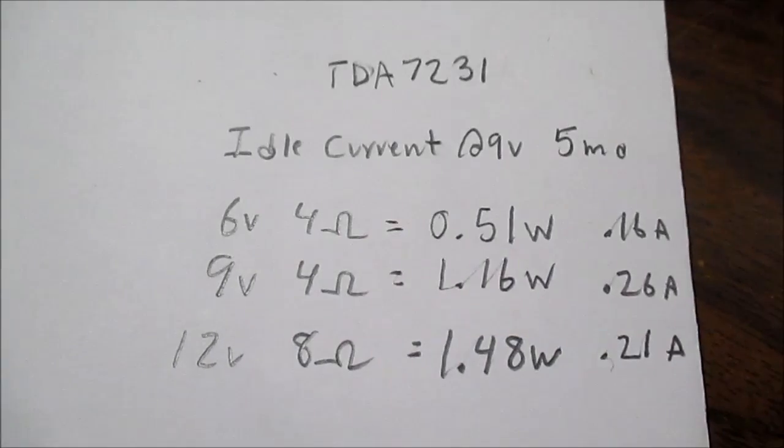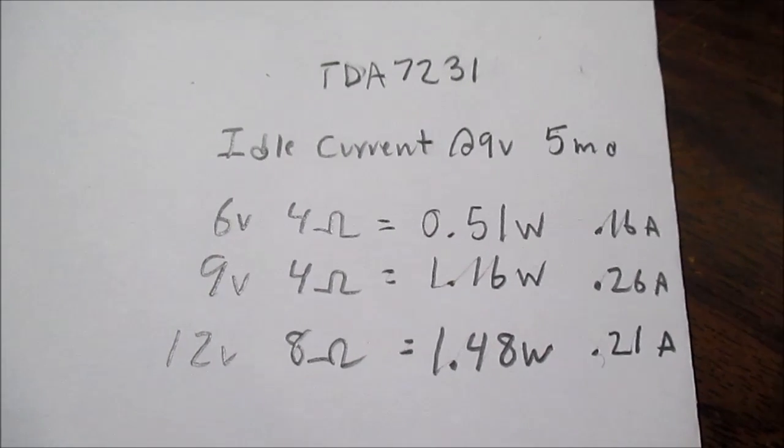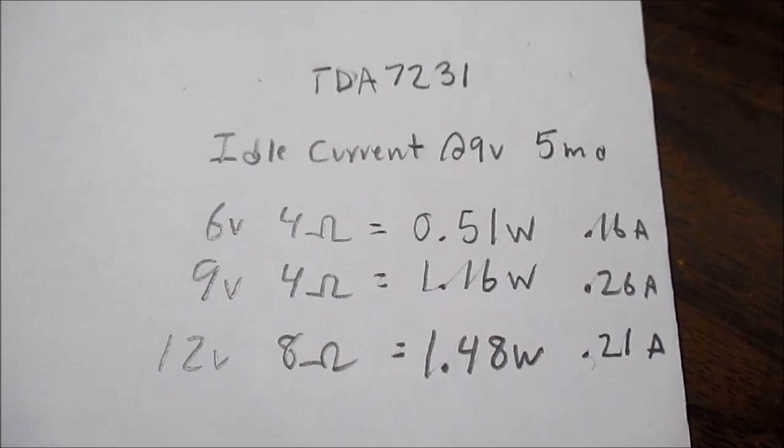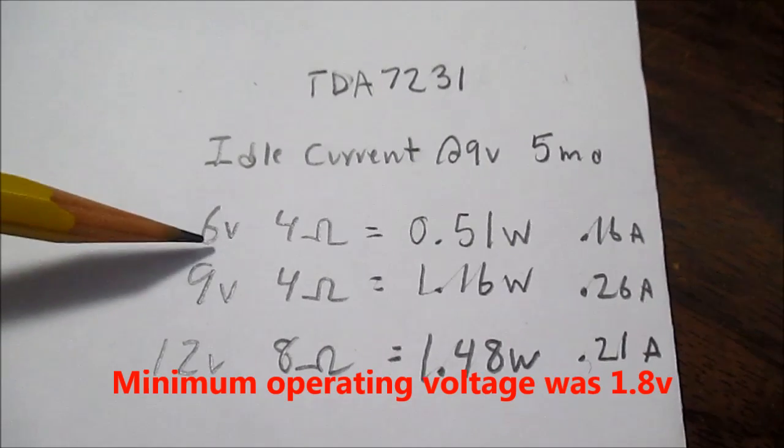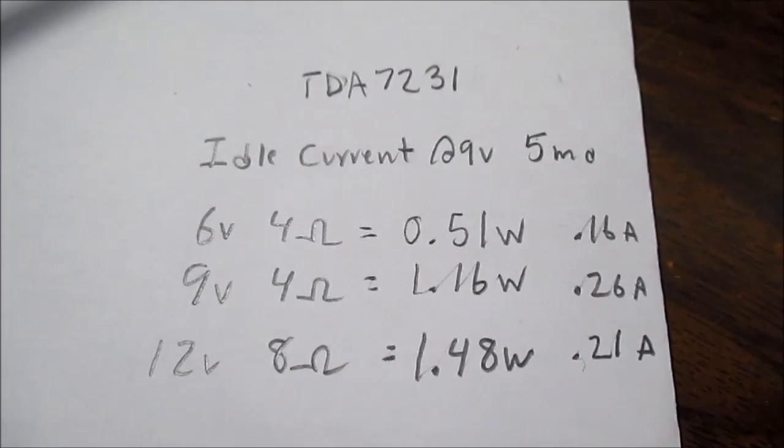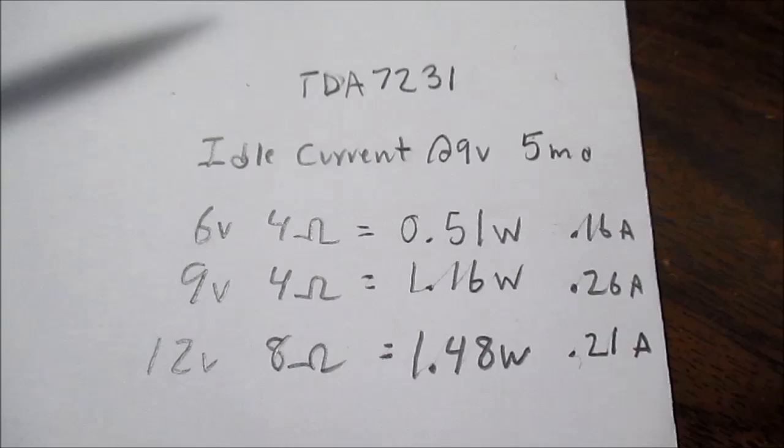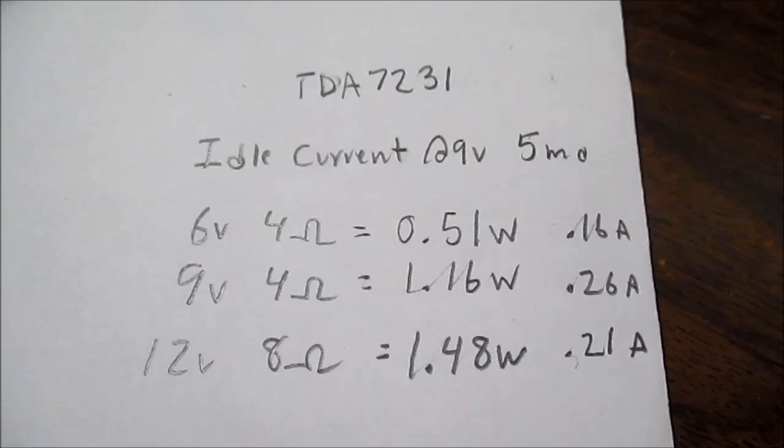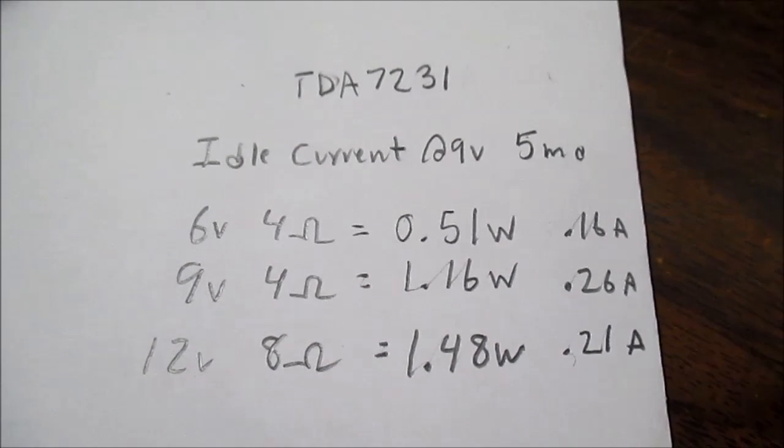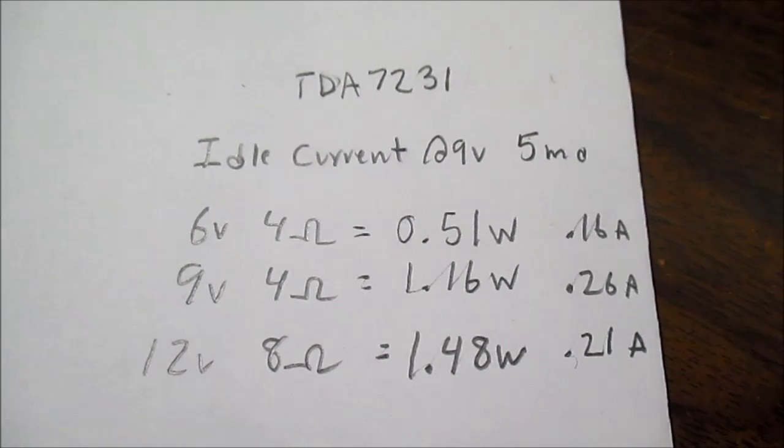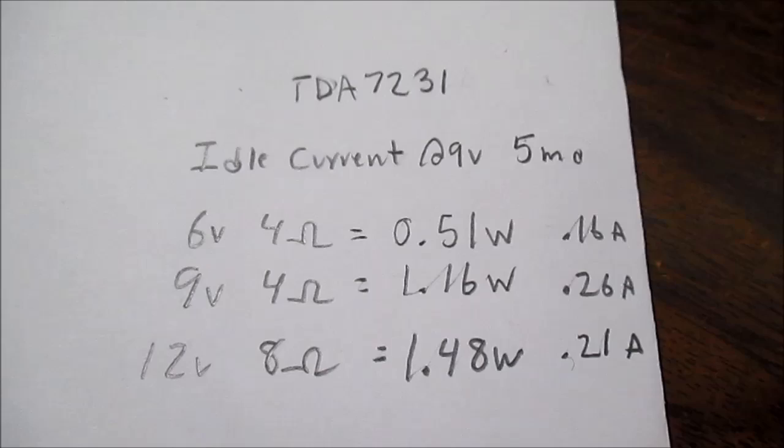So in summary, the TDA7231 chip, the idle current draw at 9 volts is only 5 milliamps, so it's excellent for batteries. 6 volts 4 ohms, we got 0.51 watts, power supply current was 160 milliamps. At 9 volts 4 ohms, we got 1.16 watts, 260 milliamps. And again, at 12 volts 8 ohms, we got 1.48 watts out and a power supply current of 210 milliamps.